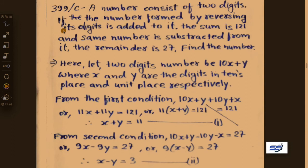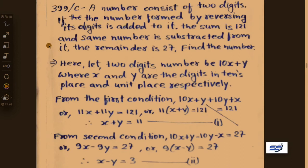Next problem: a number consists of two digits. The number formed by reversing its digits is added to it and the sum is 121. The same number is subtracted from it and the remainder is 27. Find the number. This is a verbal equation problem.